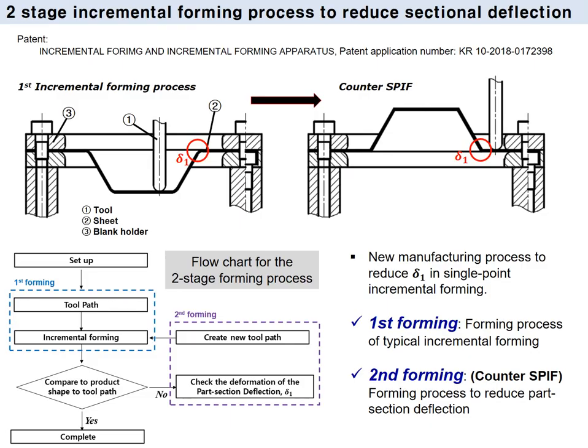I will explain the concept of the two-stage incremental forming process. The first incremental forming process is the same as the conventional incremental forming process. After finishing the first stage, the sheet is rotated and the second incremental forming process — a counter incremental forming process — is applied. In the counter incremental forming process, counter deformation is applied where the section deflection occurs. A flow chart of the two-stage forming process is shown in the next figure.